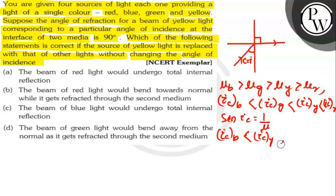TIR, total internal reflection, as corresponding to Ic Y, R is equal to 90 degrees. Since Ic Y is less than Ic R, the beam of red light would not undergo total internal reflection.